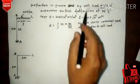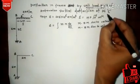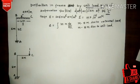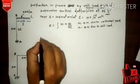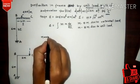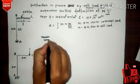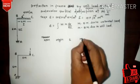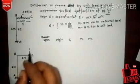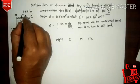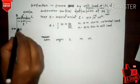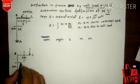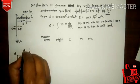Draw the same frame again, remove the actual loads, and apply a unit load where we desire the deflection — in our case at point C. Prepare a table with columns: span, origin, I, capital M, and small m. Divide the frame into sections: section 1 and section 2.